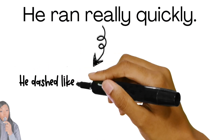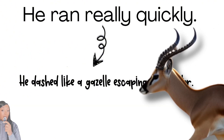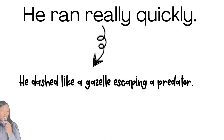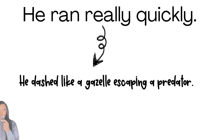say 'he dashed like a gazelle escaping a predator.' Here we're using a simile, which is a type of figurative language that compares two different things using 'like' or 'as.' This comparison not only illustrates speed but also evokes a sense of urgency and danger, making the sentence much more engaging.